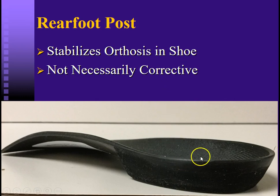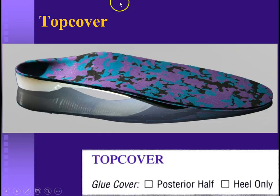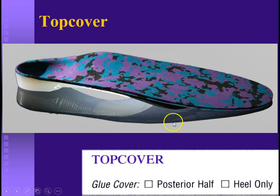You'll certainly want a rearfoot post to stabilize the device in the shoe. There's really no evidence in the literature that this is corrective — we're not putting a varus post on here, just taking the round surface of the orthosis and making it flat so it doesn't rock in the shoe. Put a top cover on it, and if you have a sweet spot, glue that cover heel only — unglued on the front half.